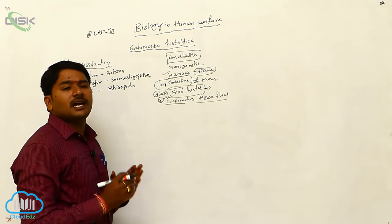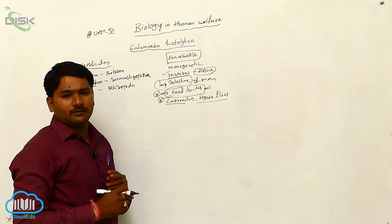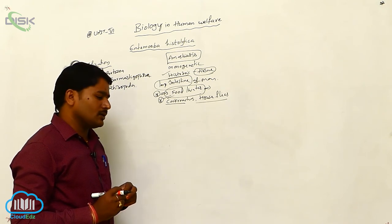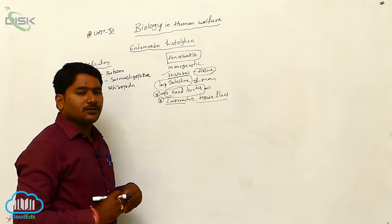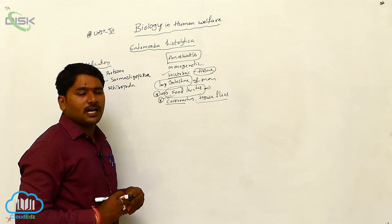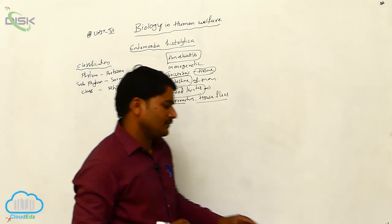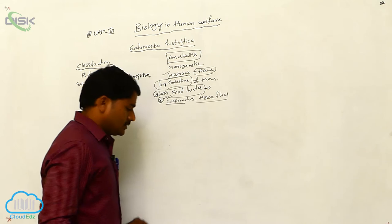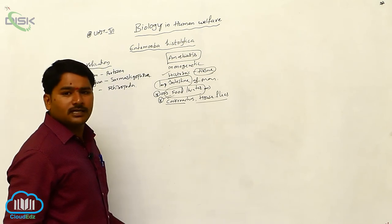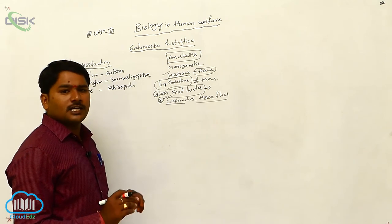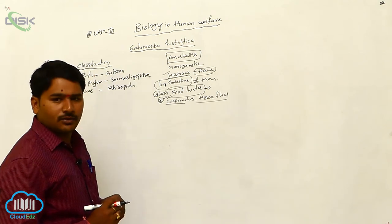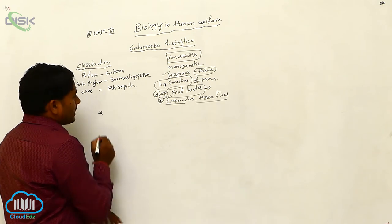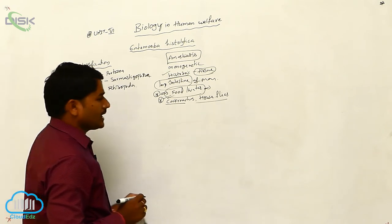Entamoeba histolytica is cosmopolitan in distribution, meaning it is found throughout the entire universe. A parasite present all over the world is described as cosmopolitan.